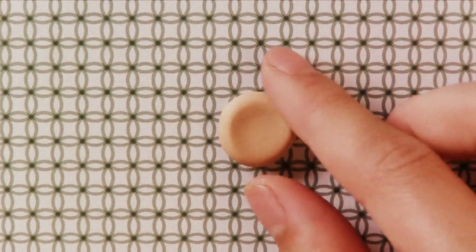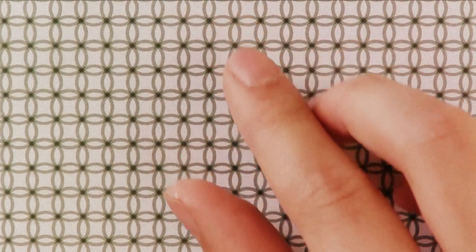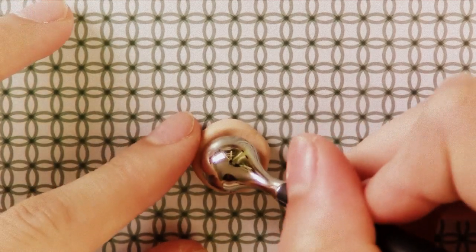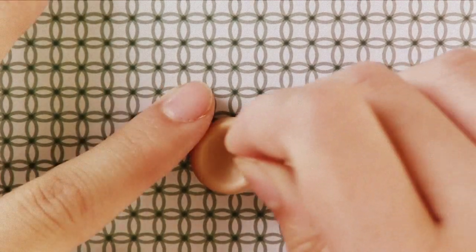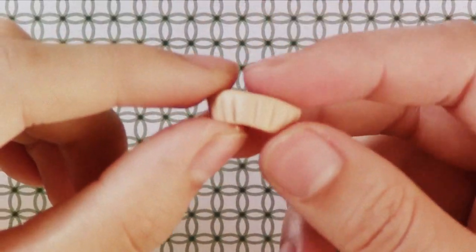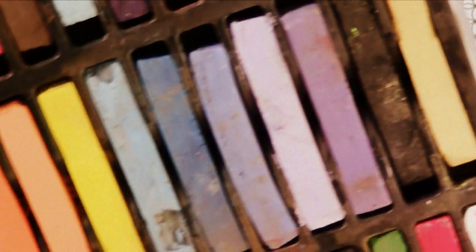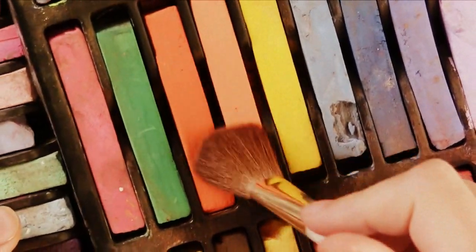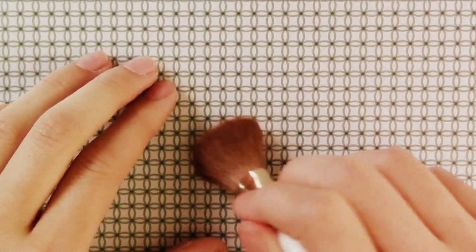If you don't have a mold, you can also form your own tart base like so. Take a toothpick and indent the sides. Now I'm taking some chalk pastel and brushing it on to make it look more realistic.